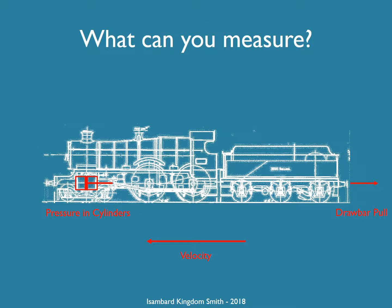There are three things that you can measure on a steam locomotive. You can measure the pressure in the cylinders that goes up and down as the pistons go back and forth. You can measure the pull of the locomotive on its train at the drawbar — the drawbar pull — and you can measure the velocity.